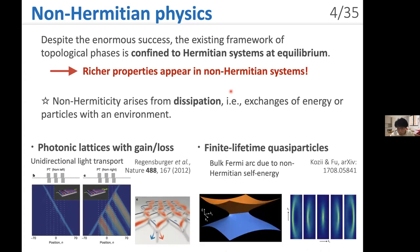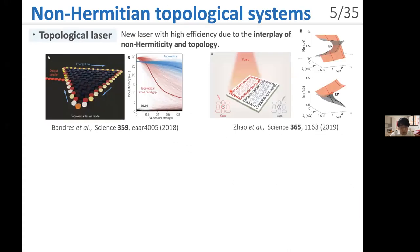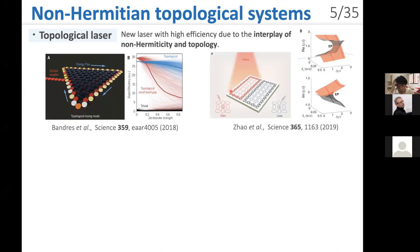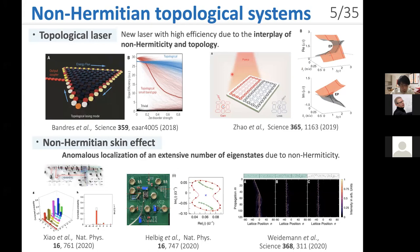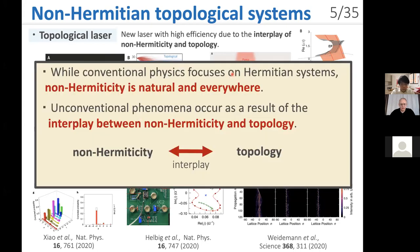Also, in quantum many-body systems, a bulk Fermi arc is theoretically predicted because of finite lifetime of quasiparticles. Furthermore, the interplay of non-Hermiticity and topology leads to new phenomena. As a prime example, researchers have developed a topological laser — a new laser with high efficiency due to the interplay between non-Hermiticity and topology. Moreover, several recent experiments observed the non-Hermitian skin effect, which is anomalous localization of an extensive number of boundary states due to non-Hermiticity. Non-Hermiticity is natural and everywhere, and unconventional phenomena occur as a result of the interplay between non-Hermiticity and topology.